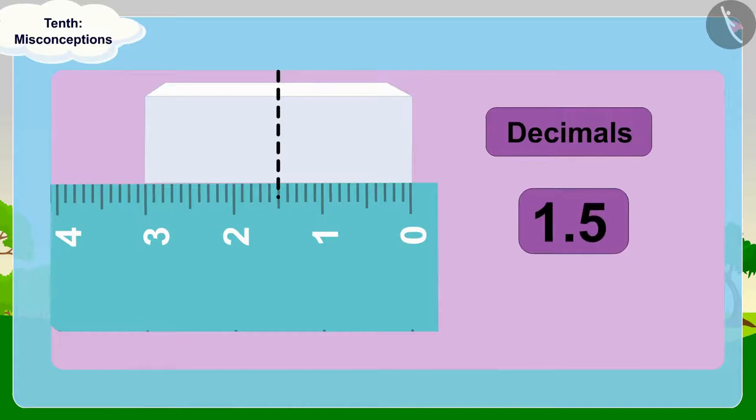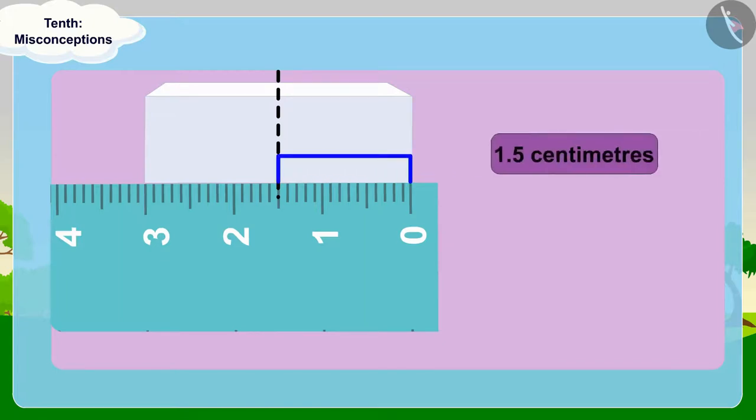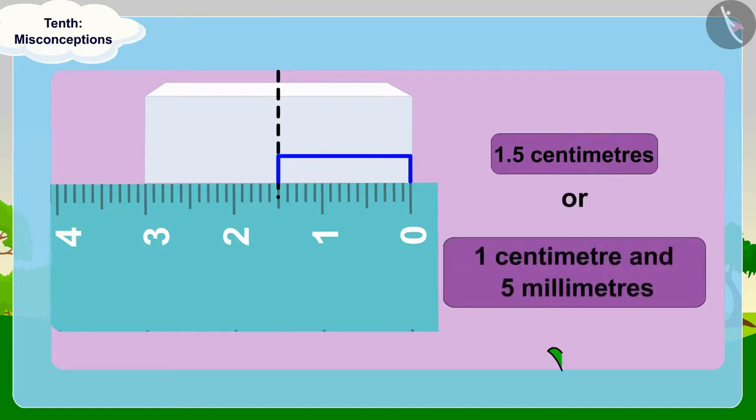And we also know that 1 tenth of a centimeter is equal to 1 millimeter. So 5 tenths of a centimeter will be equal to 5 millimeters. Bunny's statement is absolutely correct. Half of the eraser is 1.5 centimeters or 1 centimeter and 5 millimeters long.